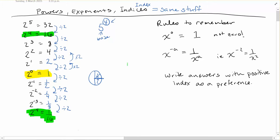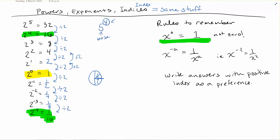Rules to remember: x to the power of 0 is always 1, not 0. This applies to anything — 5 billion to the power of 0 is 1, 40 to the power of 0 is 1, and even negative xy squared all to the power of 0 gives you 1.